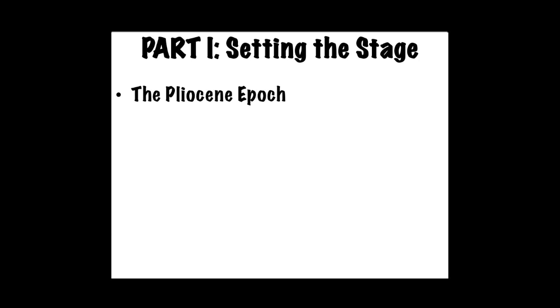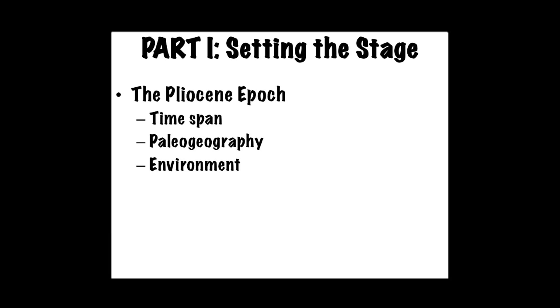I'm going to divide my talk today into three parts. The first part is setting the stage, in which I will define what the Pliocene epoch is in geological terms, what the paleogeography looked like during the Pliocene compared to earlier epochs, and what the environment looked like. This will give us the opportunity to understand in what kind of setting we find these early human ancestors during the Pliocene.